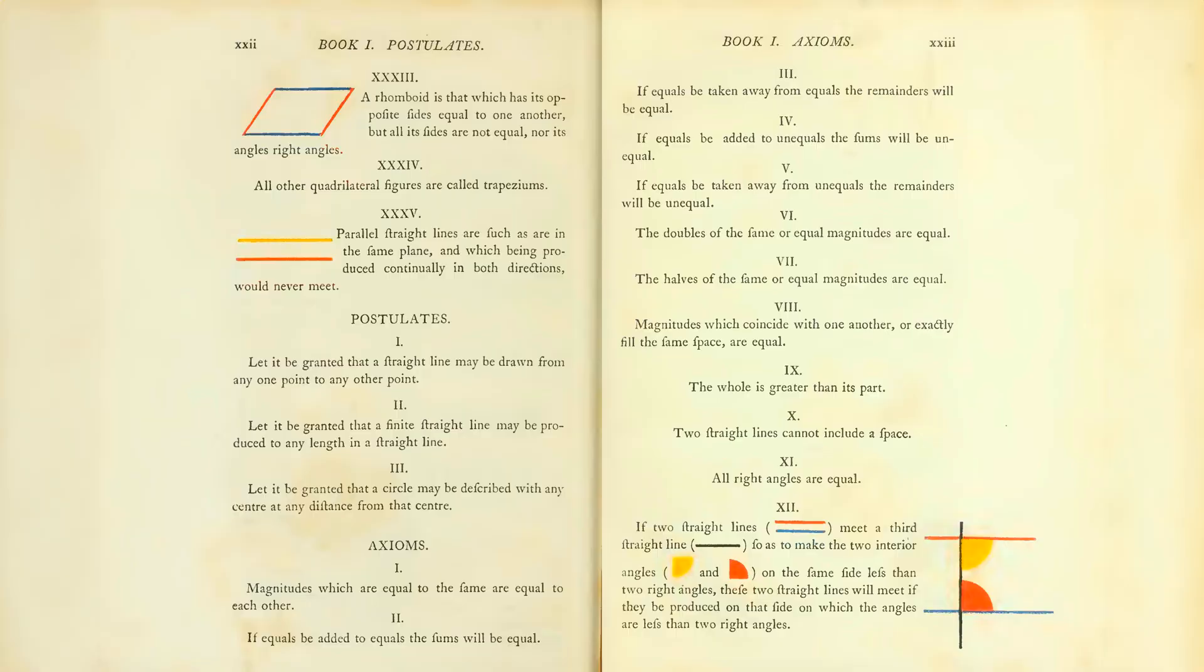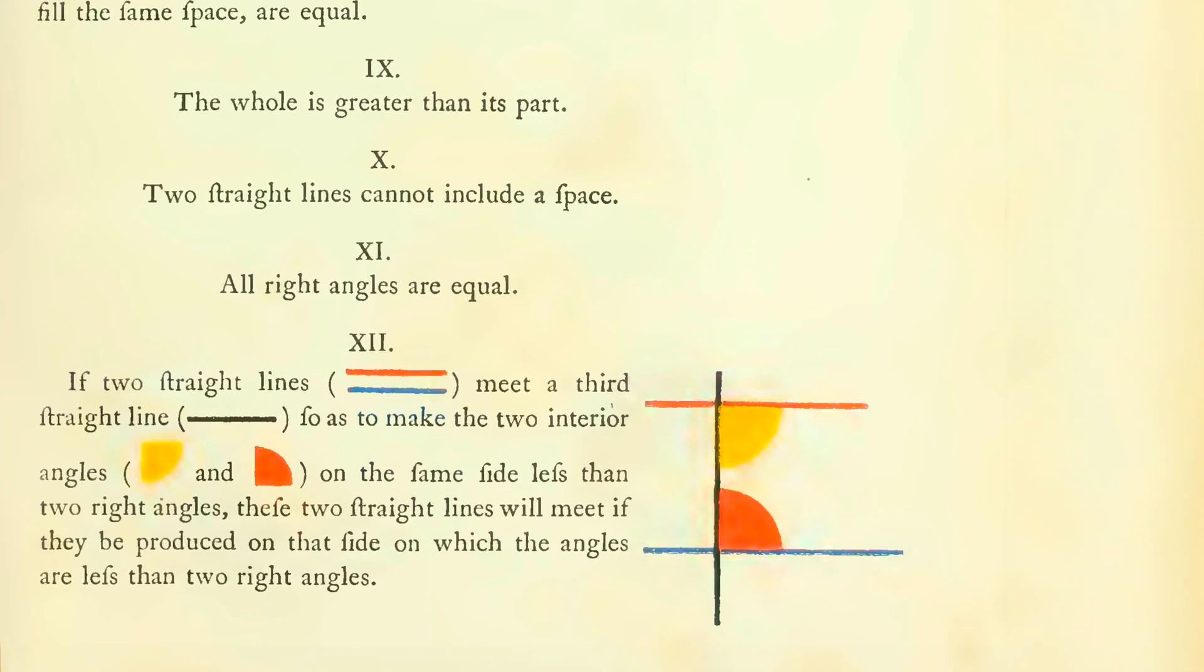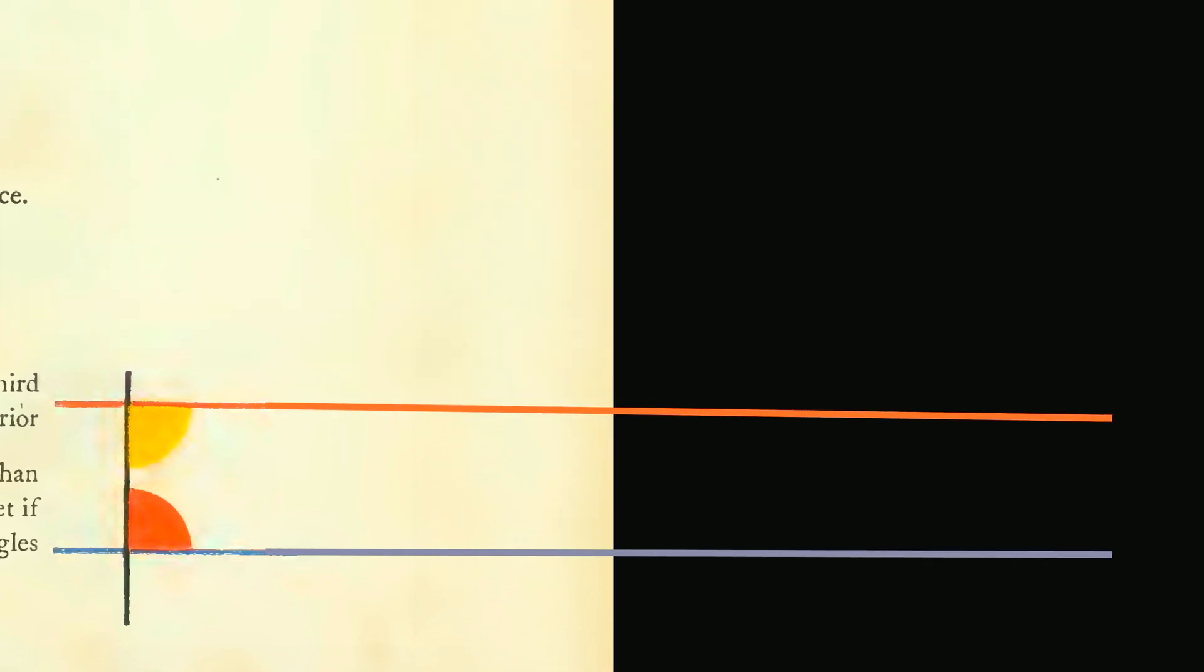Euclid's choice to accept postulate 12, known as the parallel postulate, is quite remarkable. Many of the best mathematicians over the centuries tried to invalidate his choice by coming up with a proof. However, they were all unsuccessful. It turns out that this postulate is one of the choices that defines Euclidean geometry.